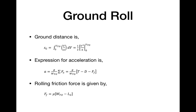During the ground roll portion of takeoff, the aircraft accelerates from rest until it reaches takeoff velocity VTO. The ground distance for this portion is Sg = ∫₀^VTO (V/A) dV = ½V²/A evaluated from 0 to VTO. The acceleration is A = (G/WTO) × ΣFx = (G/WTO) × (T − D − FF), where G is gravitational acceleration, WTO is takeoff weight, T is thrust, D is drag, and FF is frictional force.